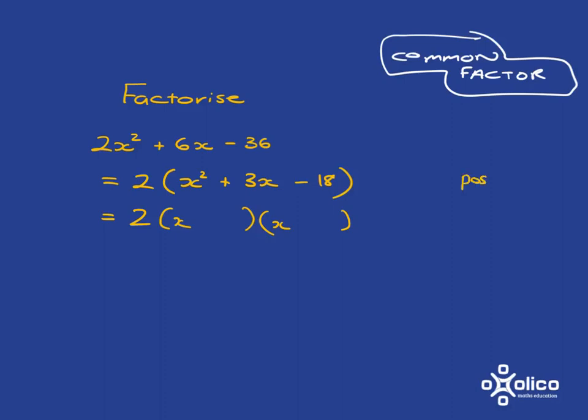So if it's going to multiply together to give you negative, it's either got to be positive times negative or negative times positive. So we're going to have a look at what are all the things that multiply together to give you -18.